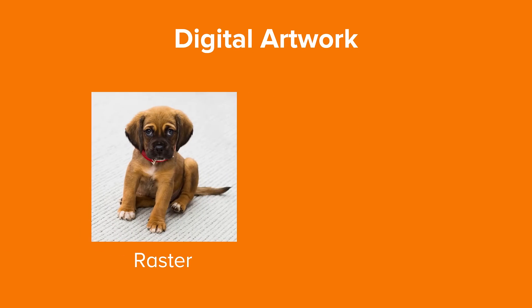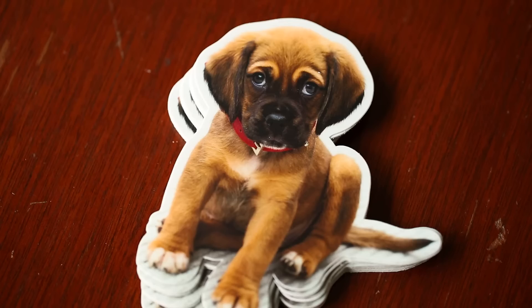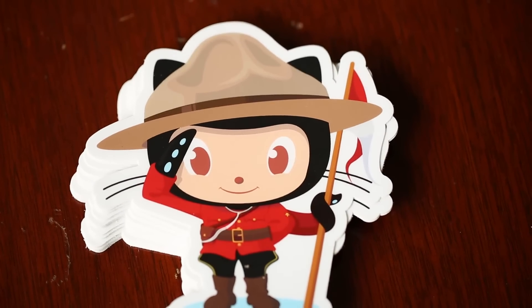There are two types of digital artwork: raster images and vector images. Both have their own advantages and both can be used for print. So what's the difference?